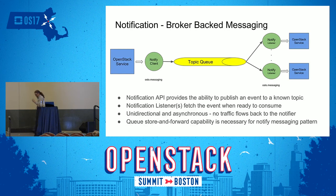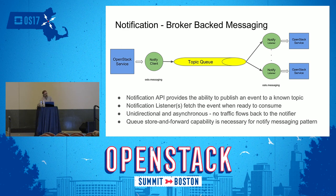If we peel back the covers on what's going on with Rabbit and notifications, we see a standard flow of messages through a queue. We have notify clients firing off events, getting acknowledgments from Rabbit saying it received the message and queued it. Then, at any time, the notification listeners can consume them from that queue. It's a unidirectional flow through a queue, and it's asynchronous. Brokers do this very well — that's what they're designed to do.